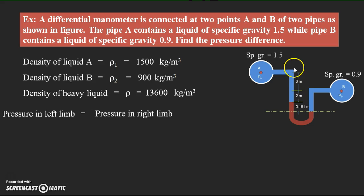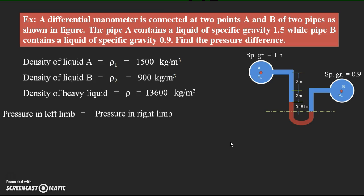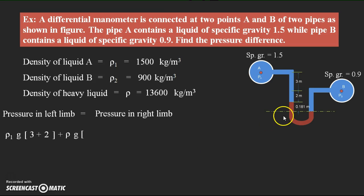For the left limb, the total height of liquid A from the datum is 3 + 2 = 5 m. So the pressure due to liquid A is ρ1 × g × (3+2). There is also mercury in the left limb, contributing ρ × g × 0.181. Additionally, the existing pressure PA is acting in pipe A. These three pressures sum to give the total pressure in the left limb: ρ1·g·5 + ρ·g·0.181 + PA.